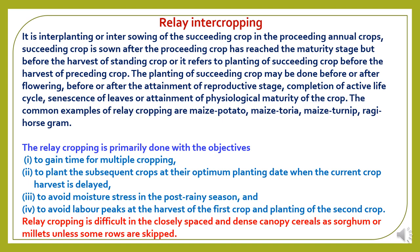The objectives of relay cropping are: first, to gain time for multiple cropping; second, to plant the subsequent crop at its optimum planting date when the current crop harvest is delayed; third, to avoid moisture stress in the post-rainy season; and fourth, to avoid labor peaks at the harvest of the first crop and planting of the second crop. Relay cropping is difficult in closely spaced and dense canopy cereals like sorghum or millet unless some rows are skipped.